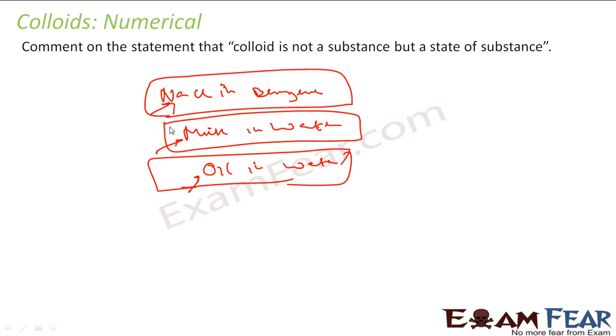For the colloid you need both dispersion phase and dispersion medium. So we can see that colloid is not a substance but the state of substance. We say liquid in liquid, colloidal solution in gas, solid in liquid, solid in gas. So we had eight such combinations. So colloid is not a substance but a state of substance.